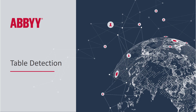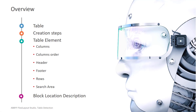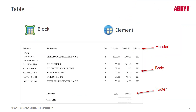We'll talk about ABBYY FlexiCapture's FlexiLayout Studio and how it can capture tables. It's a very powerful tool. We'll begin with talking about what a table looks like, then talk about creation steps, and what are the components in the table element, followed by a discussion of the table block. When you create a table, you create a block, you create a table element, and the data targeted includes the header data, which is really the column headers, such as quantity and unit price.